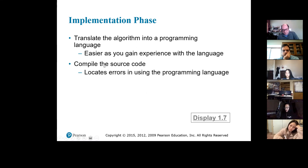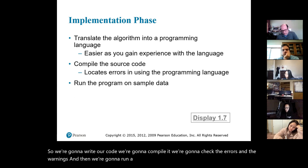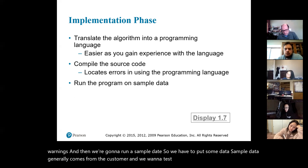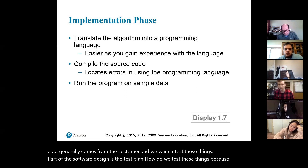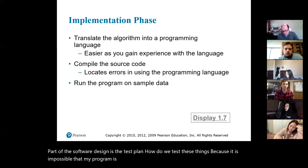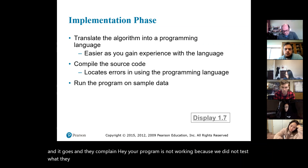We're going to write our code, compile it, check the errors and warnings, and then run sample data. Sample data generally comes from the customer and we want to test these things. Part of software design is the test plan — how do we test these things? It's possible my program is running fine right now, but when we give it to the customer they complain it's not working because we did not test what they're testing in their environment.